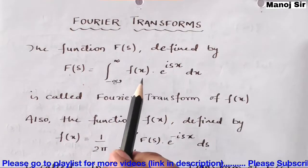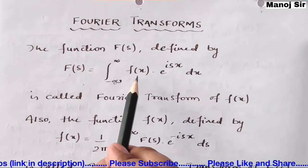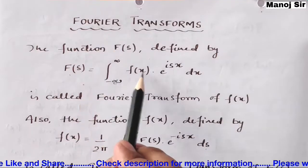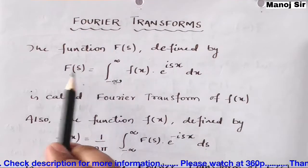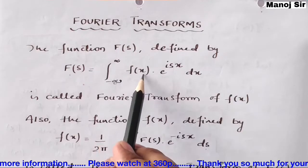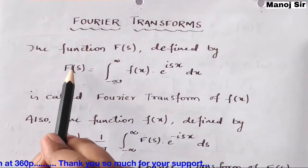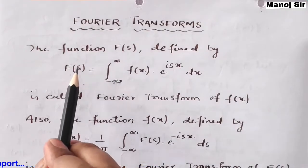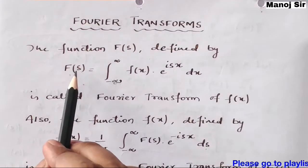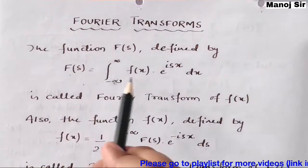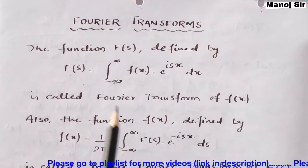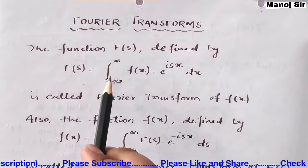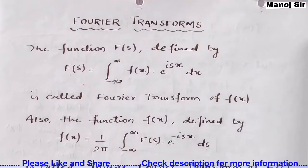So if you have a function f of x and need to find its Fourier transform, the result is F of s — here f is small in f(x) but capital F in F(s). If somebody writes capital F of s, it means it is the Fourier transform of some function f of x. The formula is: F(s) equals integration from minus infinity to plus infinity of f(x) into e to the power i·s·x dx.